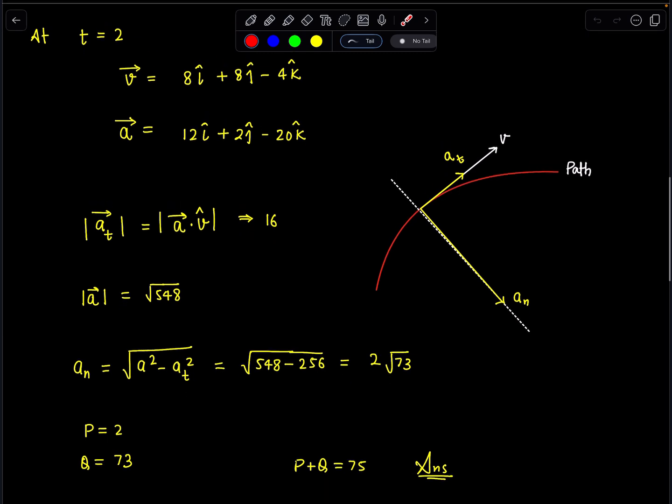And similarly acceleration magnitude from here you can calculate and that will come out as √548. Now normal acceleration I can directly calculate as because these two are perpendicular so a_total is going to be a_t squared plus a_normal squared. So a_normal square will be root of total acceleration square minus tangential acceleration square. When we substitute we are going to get this answer as 2√73. So P is known to us Q is known to us and P plus Q is 75. This is going to be the answer.